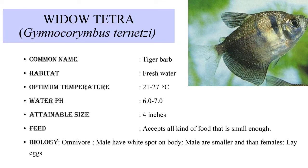The next fish is Video Tetra, which is scientifically called Gymnocorymbus ternetzi. The common name is Video Tetra. It is a freshwater fish. It lives in water where the temperature falls between 21 to 27 degrees C and the water pH should be between 6.0 to 7.0. During its life period, it attains a maximum size of about 4 inches. It feeds on all kinds of food that are small enough. The biology of this fish explains that it is an omnivore; the male has a white spot on the body, is smaller than the female, and it lays eggs to reproduce.